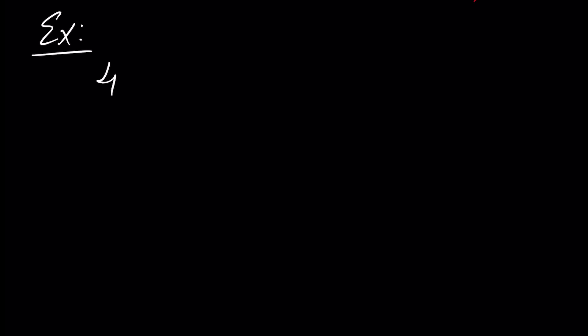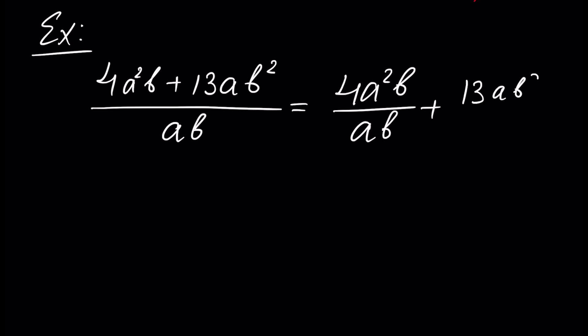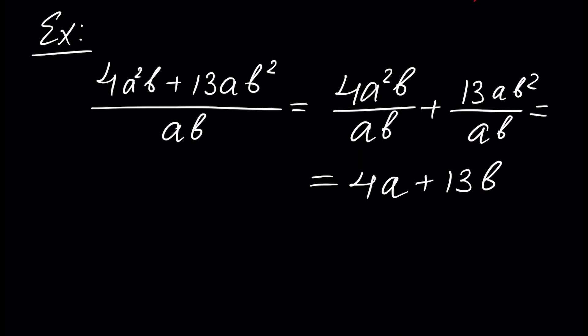First of all, let's begin with an example to gain understanding of division. Let's divide the polynomial 4a²b plus 13ab² and divide it by ab. In this case, it's very important to understand that this is equal to 4a²b divided by ab, plus 13ab² divided by ab, which is 4a plus 13b, because we have cancellations here.